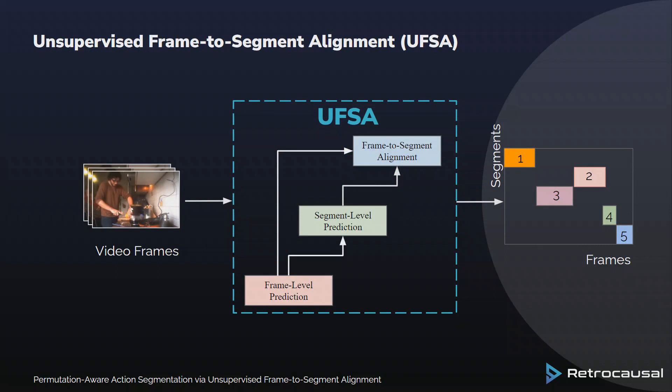In this paper, we introduce a novel approach that tackles the challenge of capturing permutations in action order. Our method leverages the frame-level representation, the segment-level representation, and a frame-to-segment alignment module. While built to handle permutation of actions, we also observe strong performance in handling missing actions.